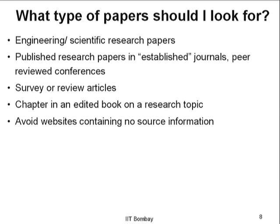The next question researchers ask is: what type of paper should I look for? A lot of this overlaps with what was discussed in the session on how to read a research paper. We are looking at engineering and scientific research papers — published research papers in established journals and peer-reviewed conferences. 'Established' is in quotes because the question always comes up: how do I know a journal is established?